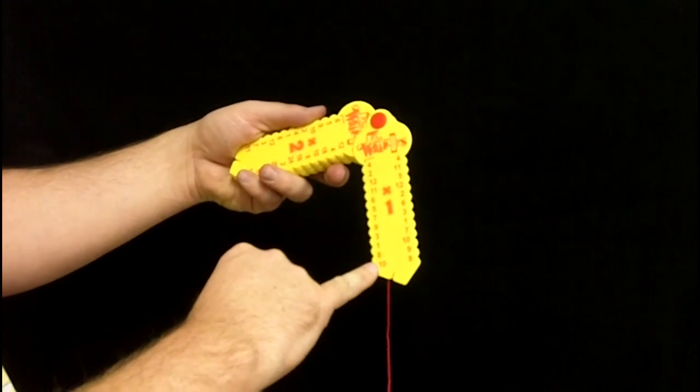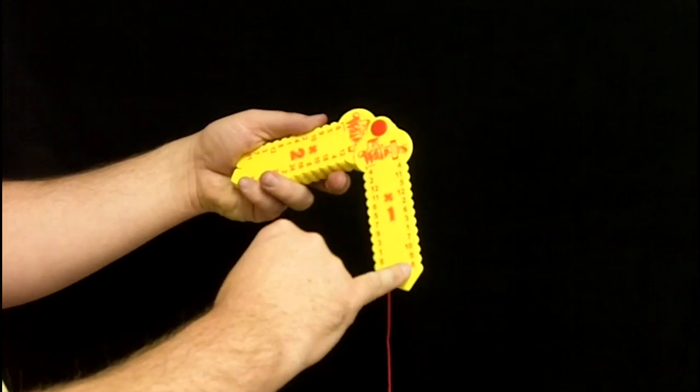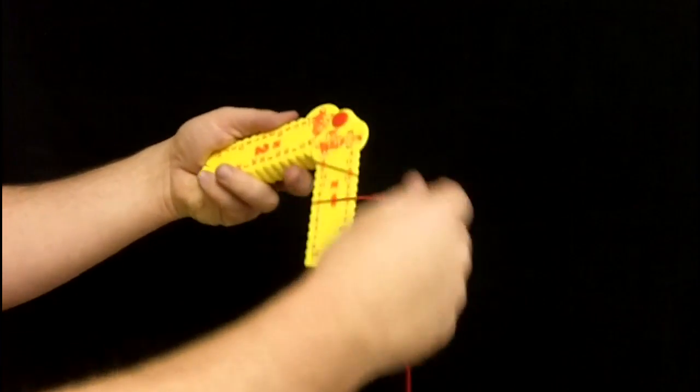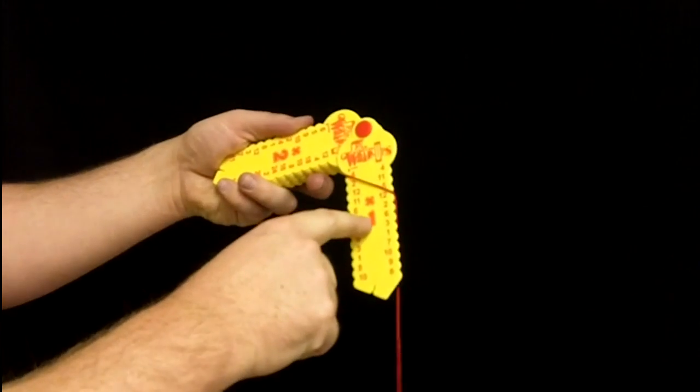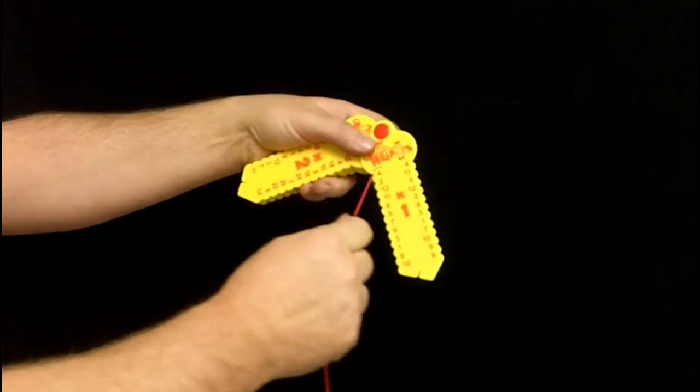You have the numbers on one side times 1, in this case, equal the numbers on the other side. And what you're going to do is wrap the string around to match the number times 1 to the number. So we're going to start here.